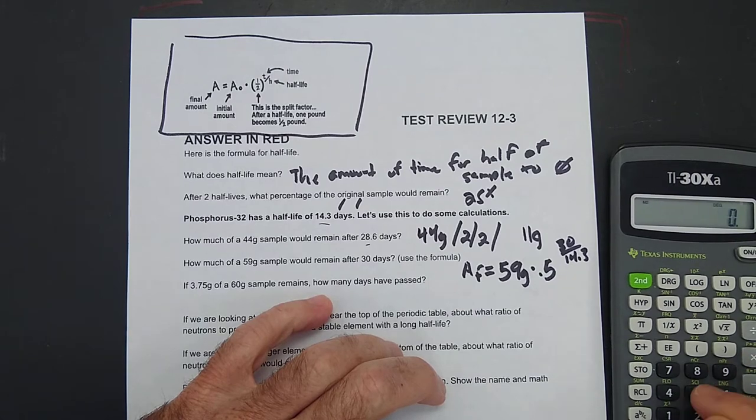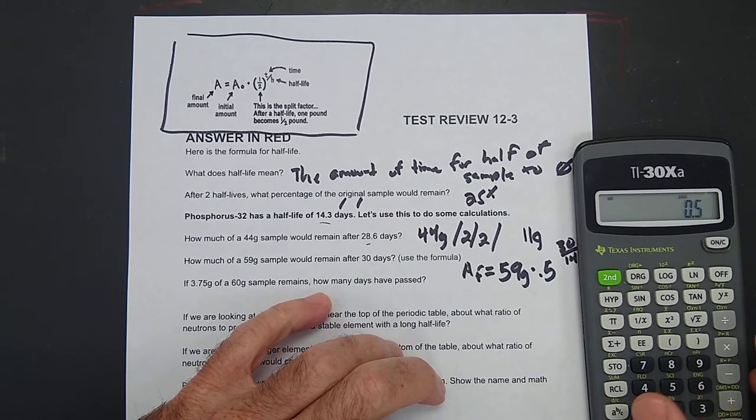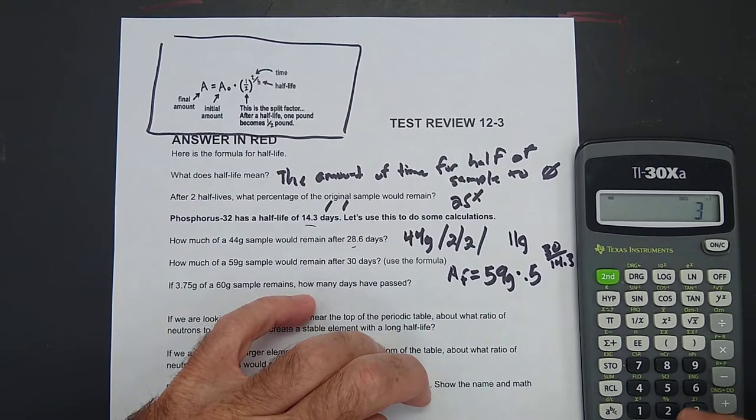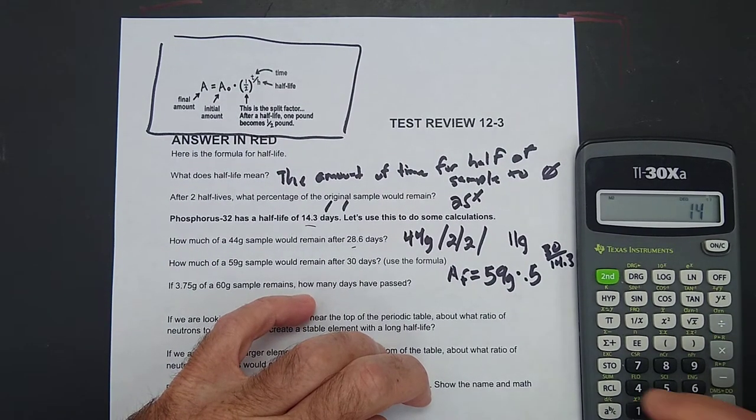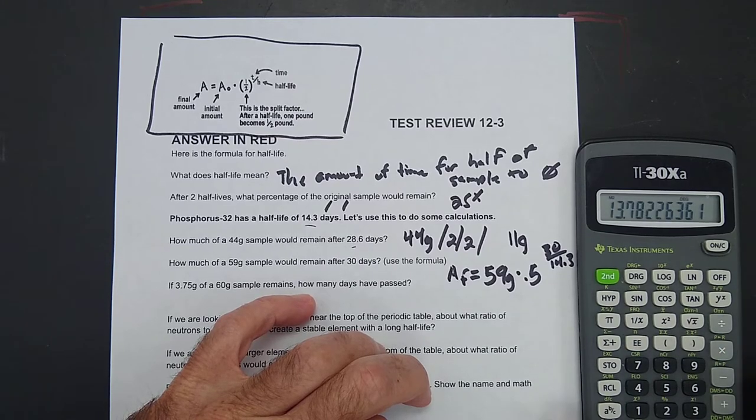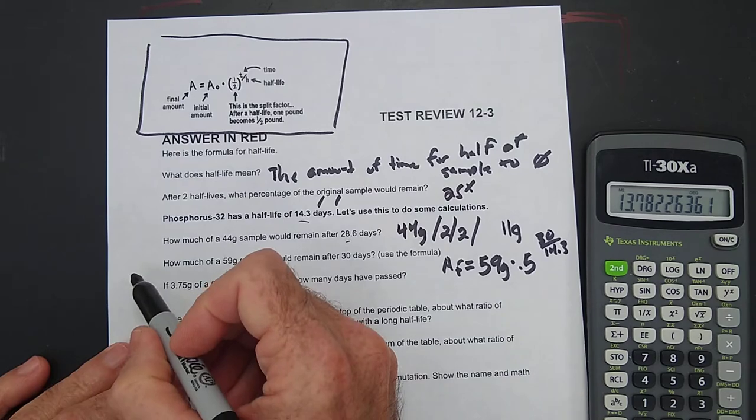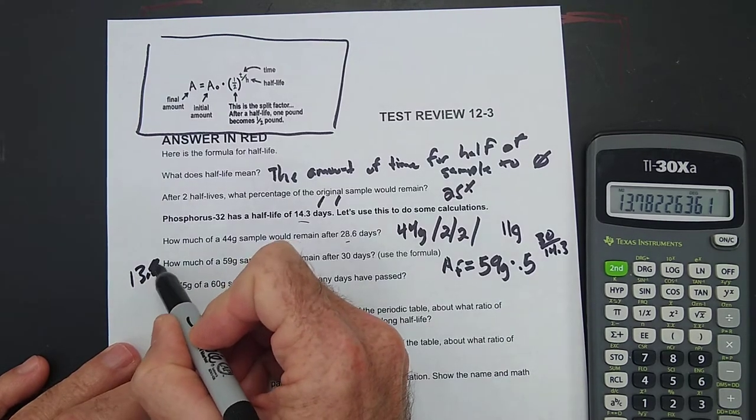59 times 0.5, y to the x, parentheses, 30 divided by 14.3, close parentheses, equals 13.78 grams. So 13.8 grams.